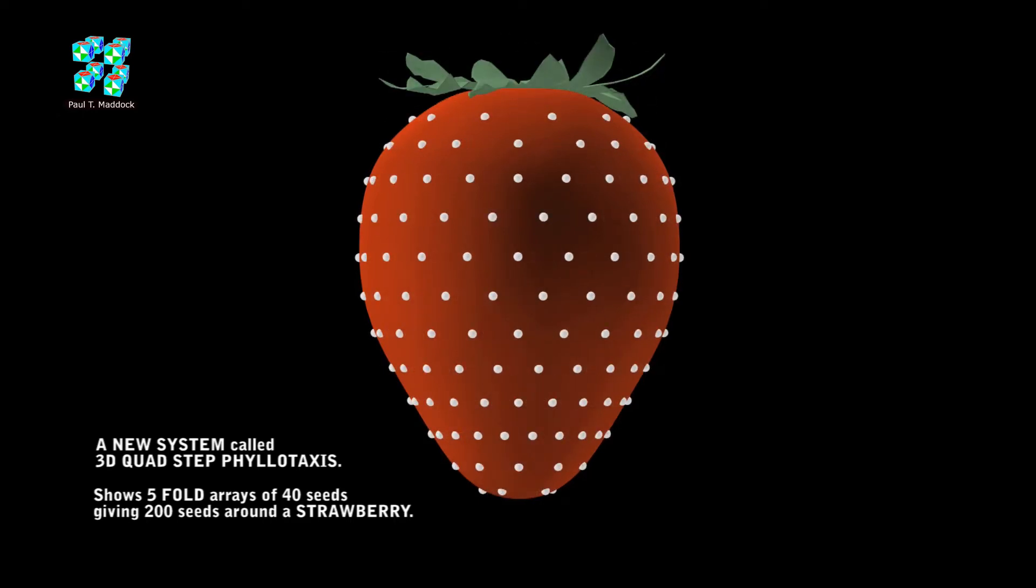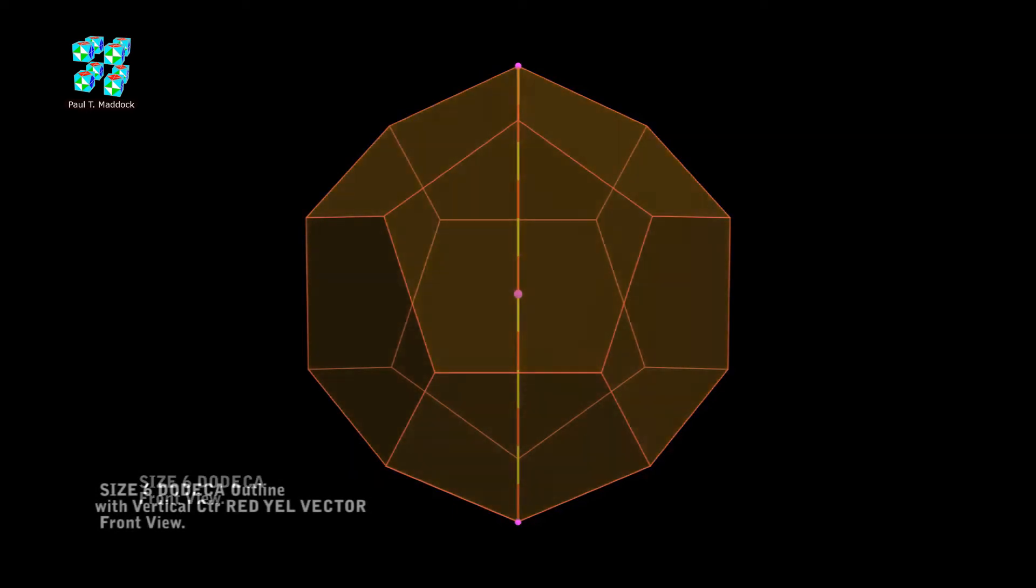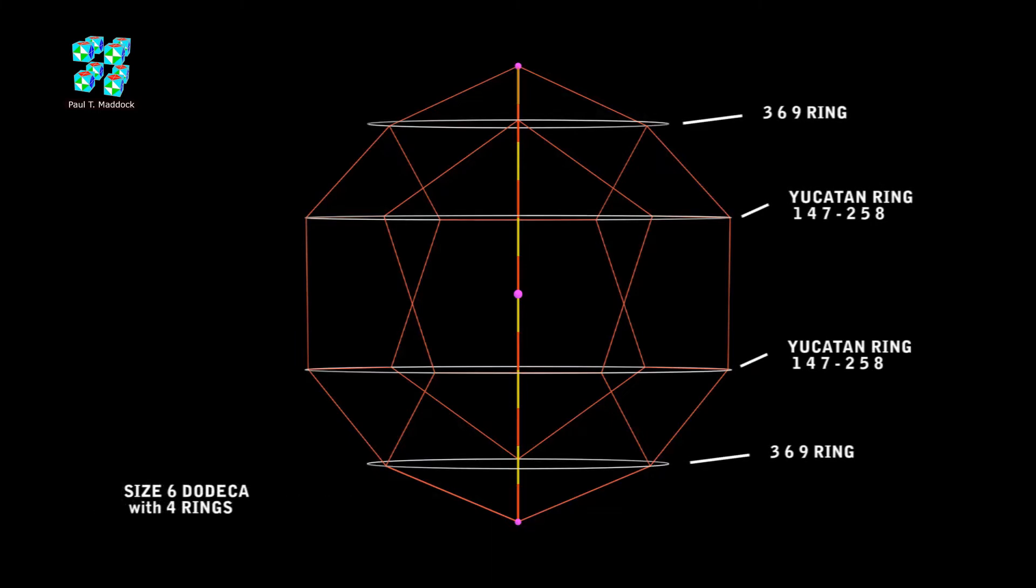We'll start with this size six dodeca. I'm calling it a dodeca and not a dodecahedron. Let's keep things simple. I'm just going to show the outline and show the vertical red-yellow vector. Our next step is to give it four rings around the vertices as I show. I showed in my earlier videos the top three vertices can be 369 and the next ring down, a Yucatan ring, is 147258.